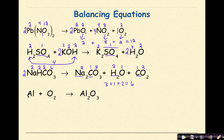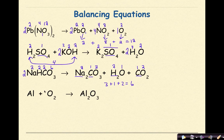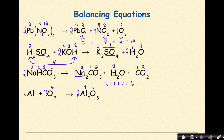Last one: Al plus O2 yields Al2O3. It would be easy to just put a 2 in front of Al, but looking at the oxygens: O2 has 2 and Al2O3 has 3 — we need the lowest common multiple, which is 6. So I put a 3 in front of Al2O3 giving 6 oxygens, and a 2 in front of O2 giving 6 oxygens — oxygens balanced. Now for aluminum: 2 times 2 from Al2O3 is 4, so I put a 4 in front of Al. I did the oxygens before the aluminum here, but I recognized it was in my best interest to do so.